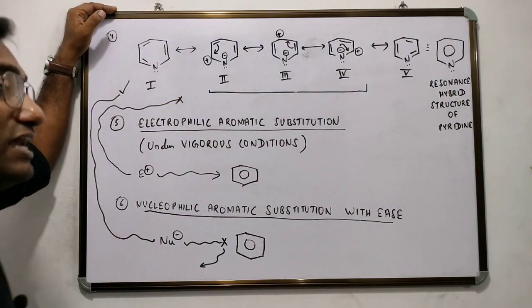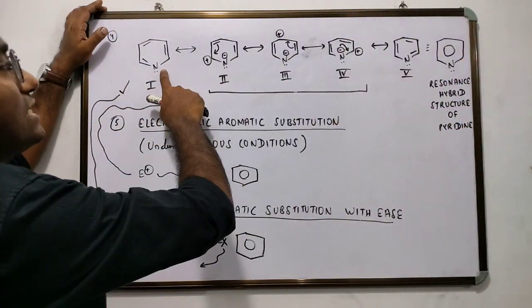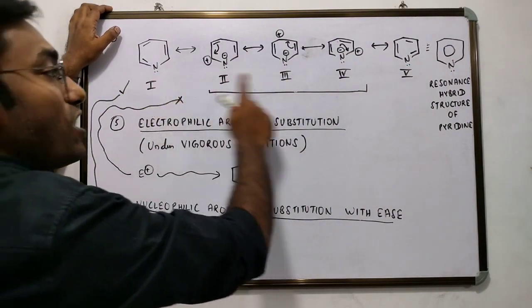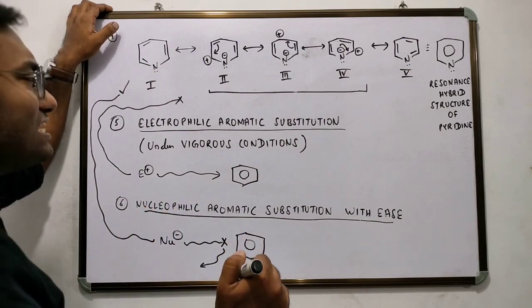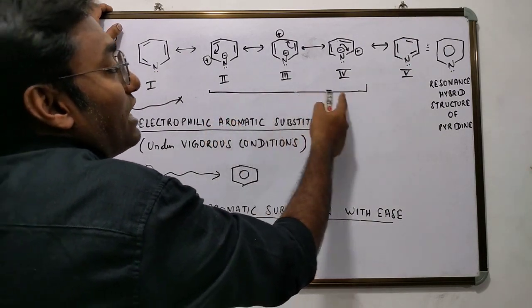That is to say, that pyridine spends most of its time as kekule resonating structure, structure 1 and structure 5, while it spends lesser time as ionic resonating structure 2, 3, and 4.